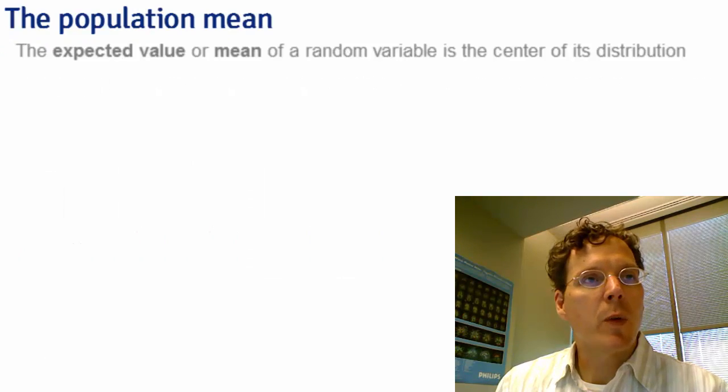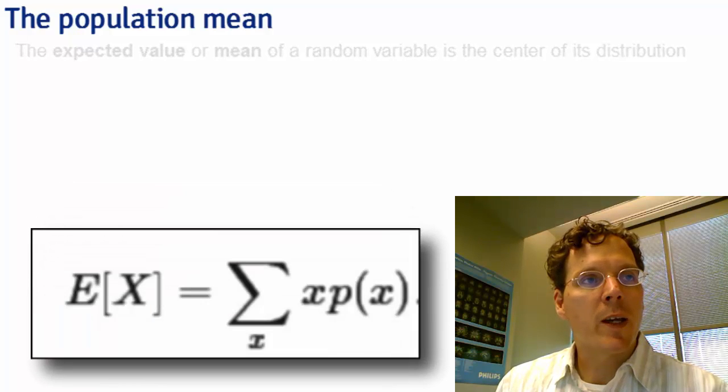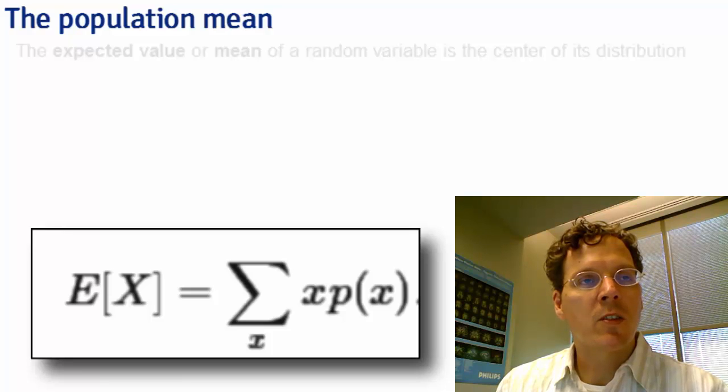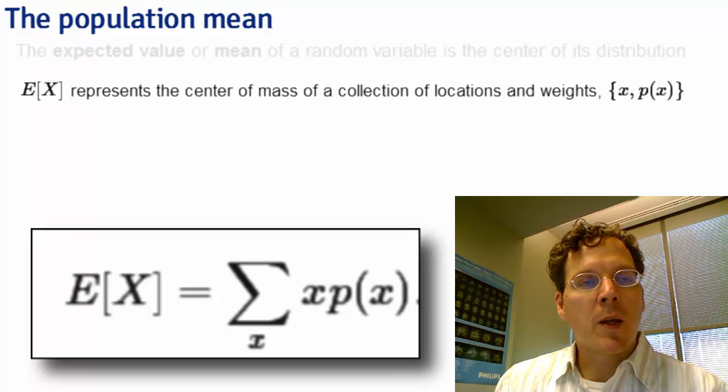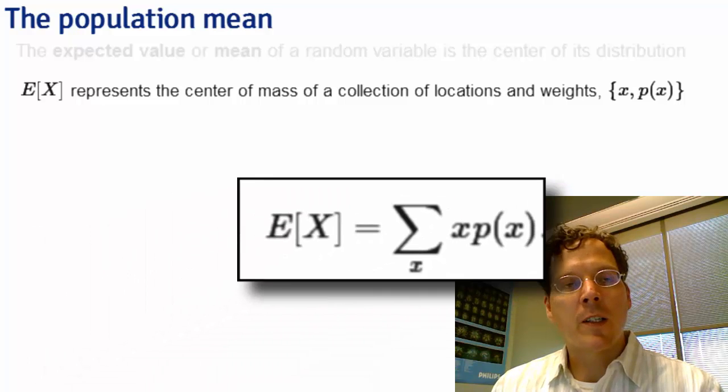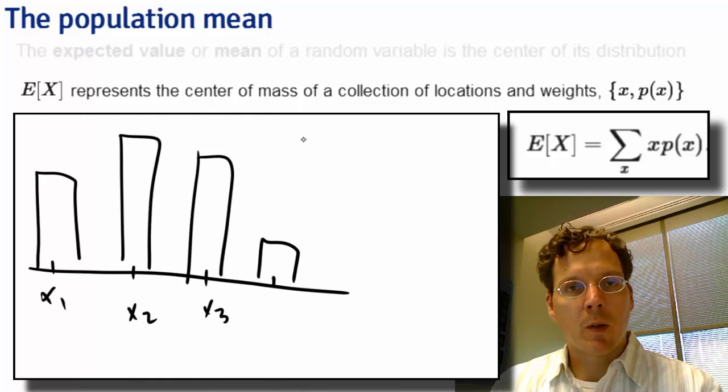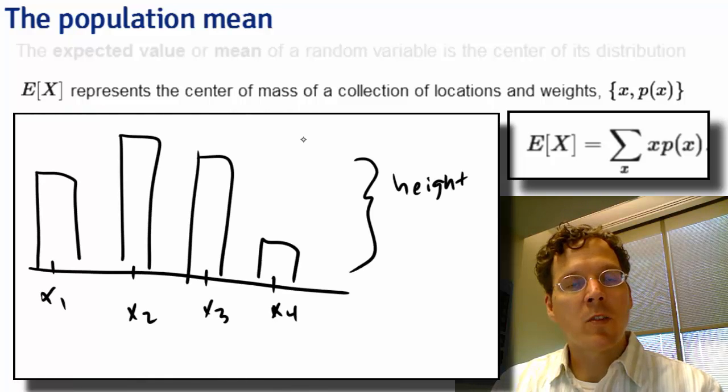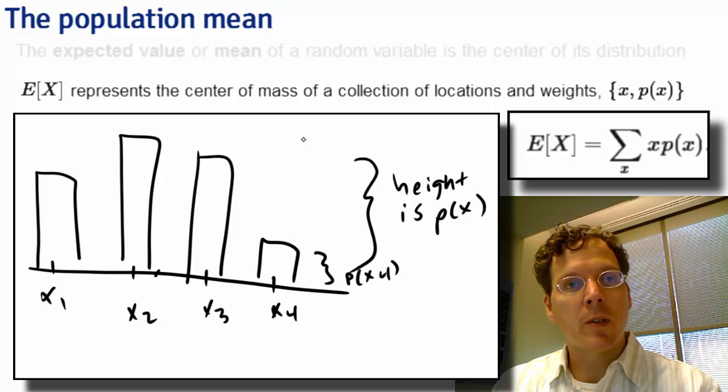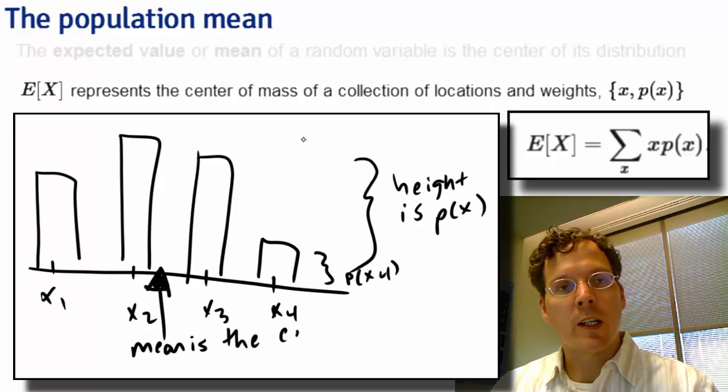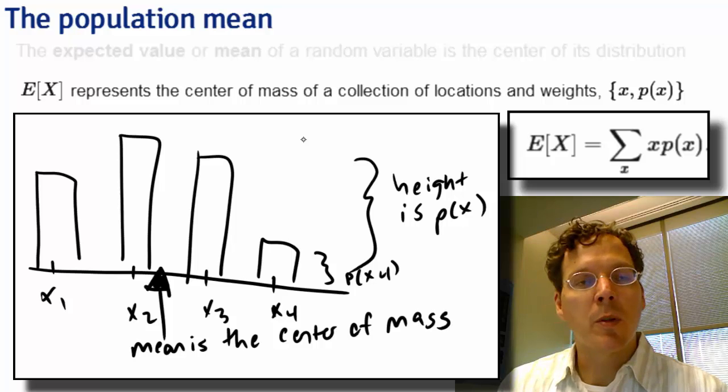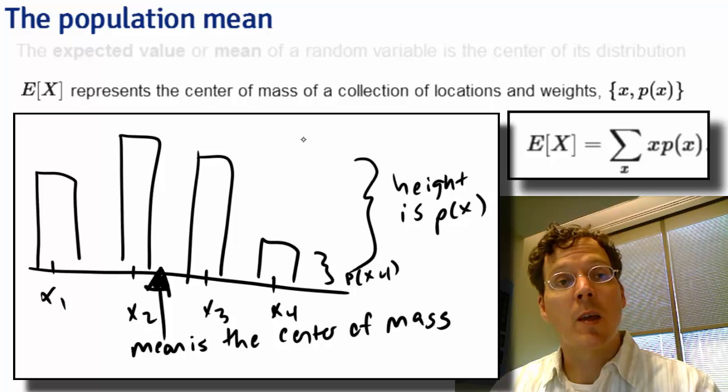The expected value or mean of a random variable is the center of its distribution. For a discrete random variable x with a probability mass function p of x, it's simply the summation of the possible values that x can take times the probability that it takes them. The expected value takes its idea from the physical center of mass. If the probabilities were weights, where their weights were governed by the value of the probability and the x was the location along an axis, the expected value would simply be the center of mass.